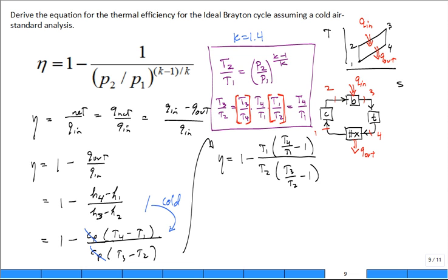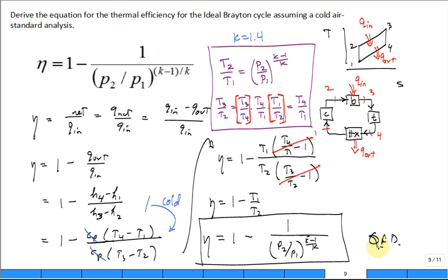we can say this equals that. So the efficiency is one minus T one over T two. We already know what T one over T two is. It's one over P two over P one to the K minus one over K. So that's the result we wanted to show.